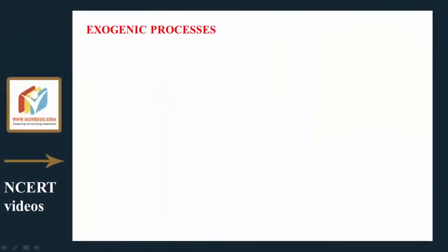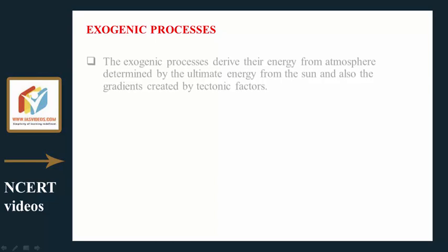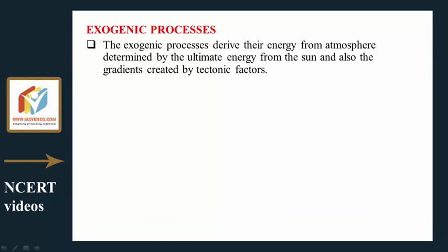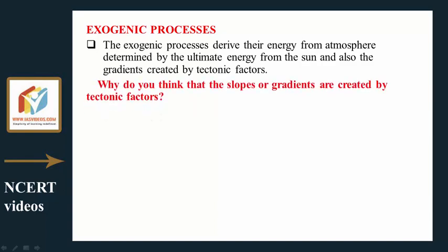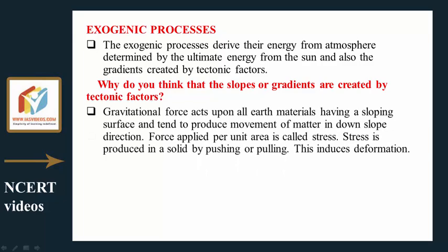The exogenic processes derive their energy from the atmosphere, determined by the ultimate energy from the sun, and also the gradients created by tectonic factors. Gravitational force acts upon all earth materials having a sloping surface and tends to produce movement of matter in the downslope direction. Force applied per unit area is called stress, which is produced in a solid by pushing or pulling, inducing deformation.